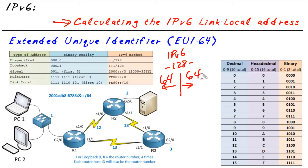One thing we have to understand is that in an IPv6 network, a link local address is going to be created on every single interface that runs IPv6. It's likely we're going to have a global address reachable from the rest of the internet, and we're also going to have a link local address that's only reachable on our local segment.